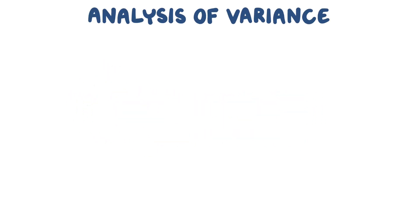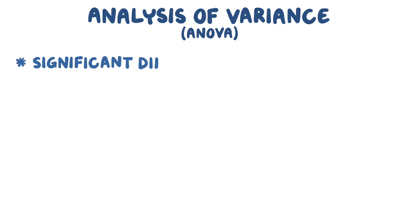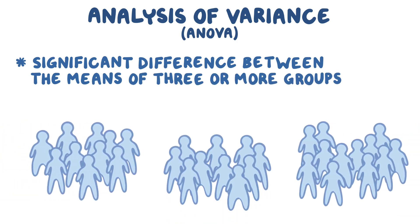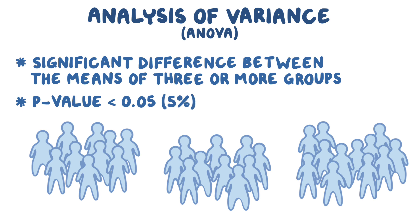Analysis of variance, or simply ANOVA, is a type of parametric statistical test used to determine if there's a significant difference between the means or averages of three or more groups. Significance is normally defined by a p-value of less than 0.05, or 5%.